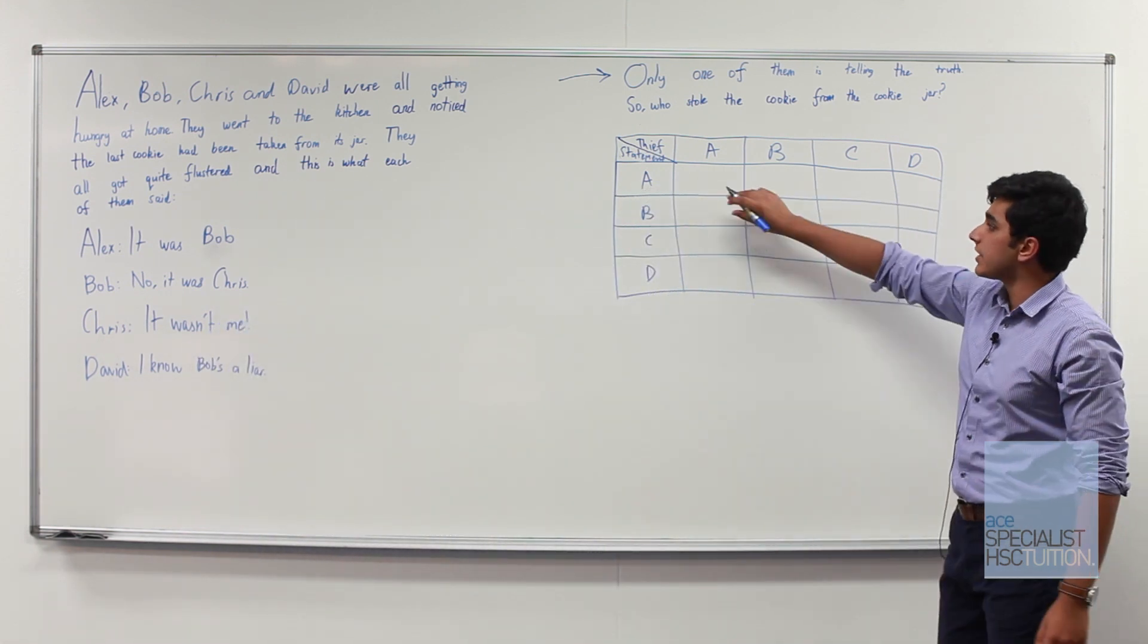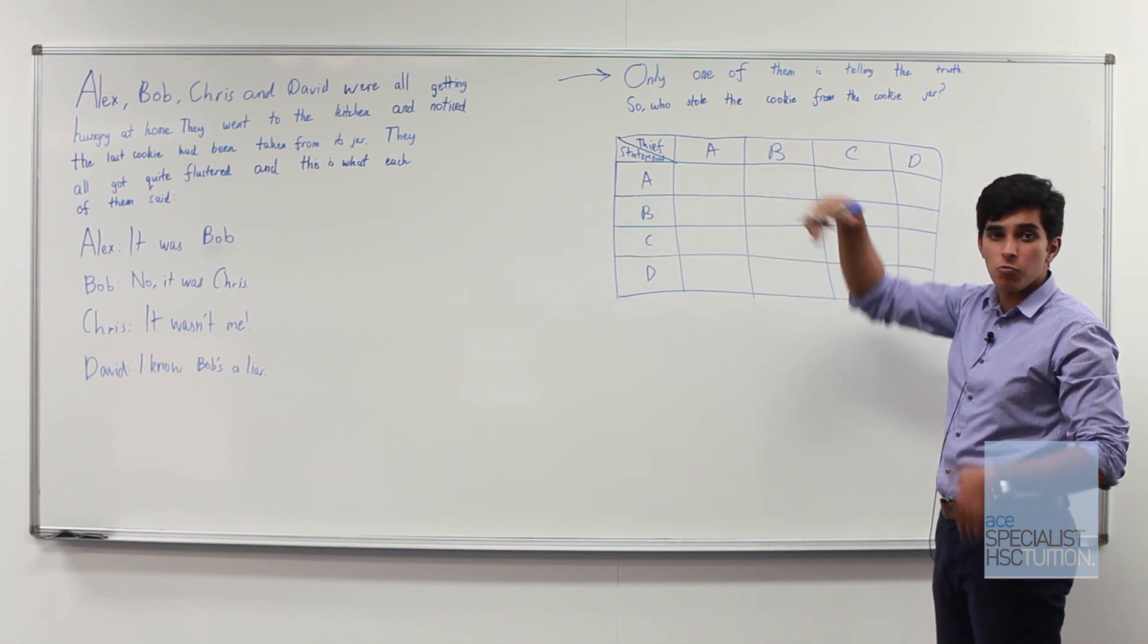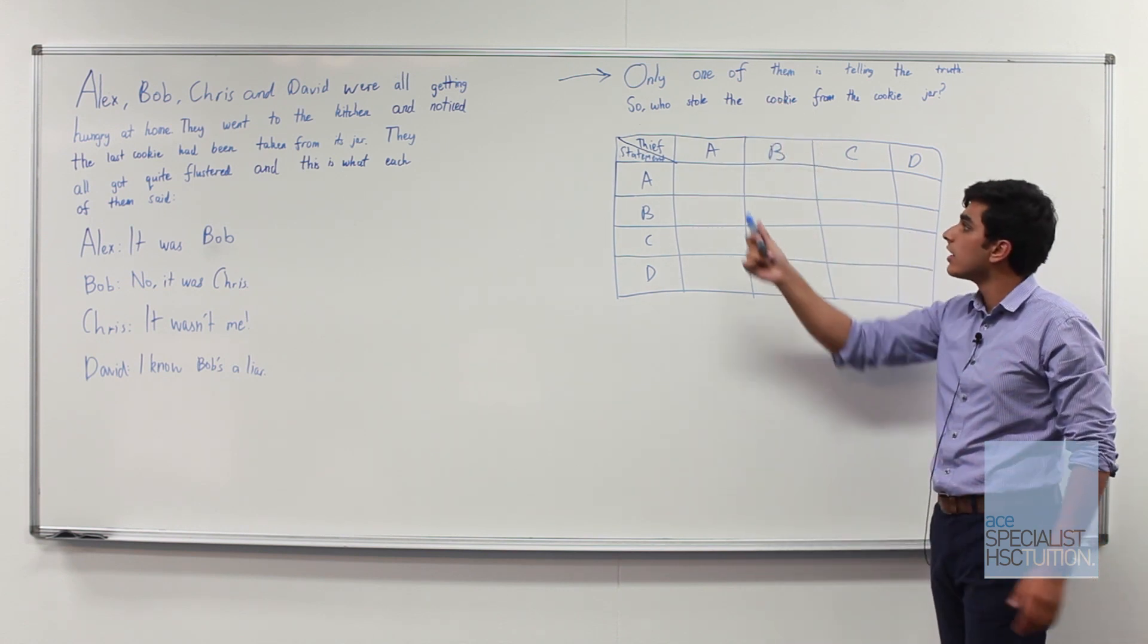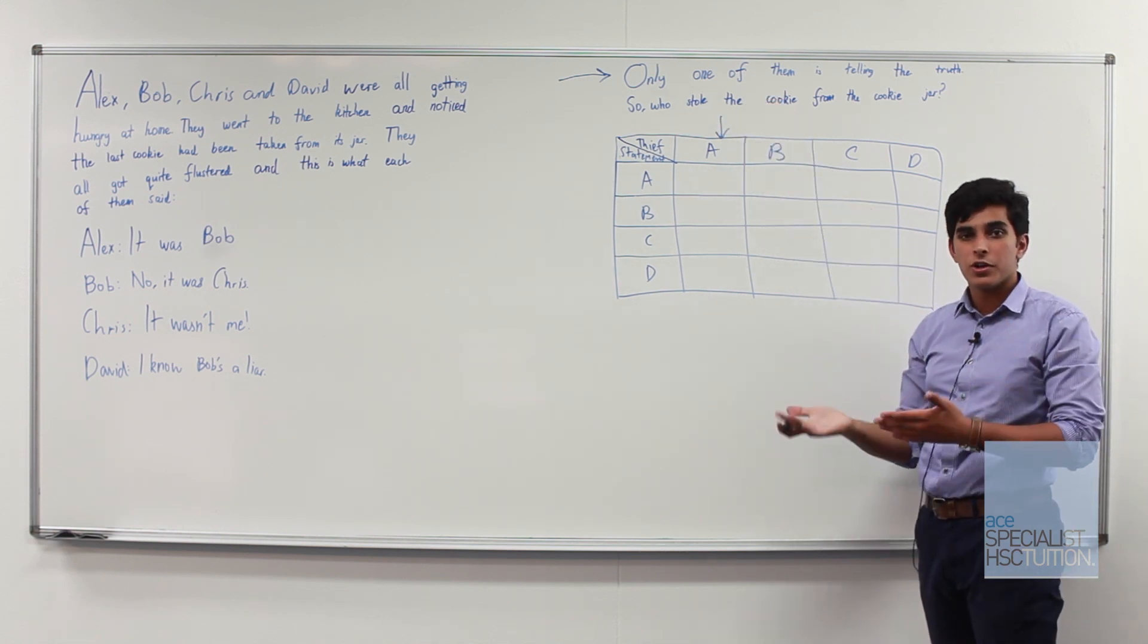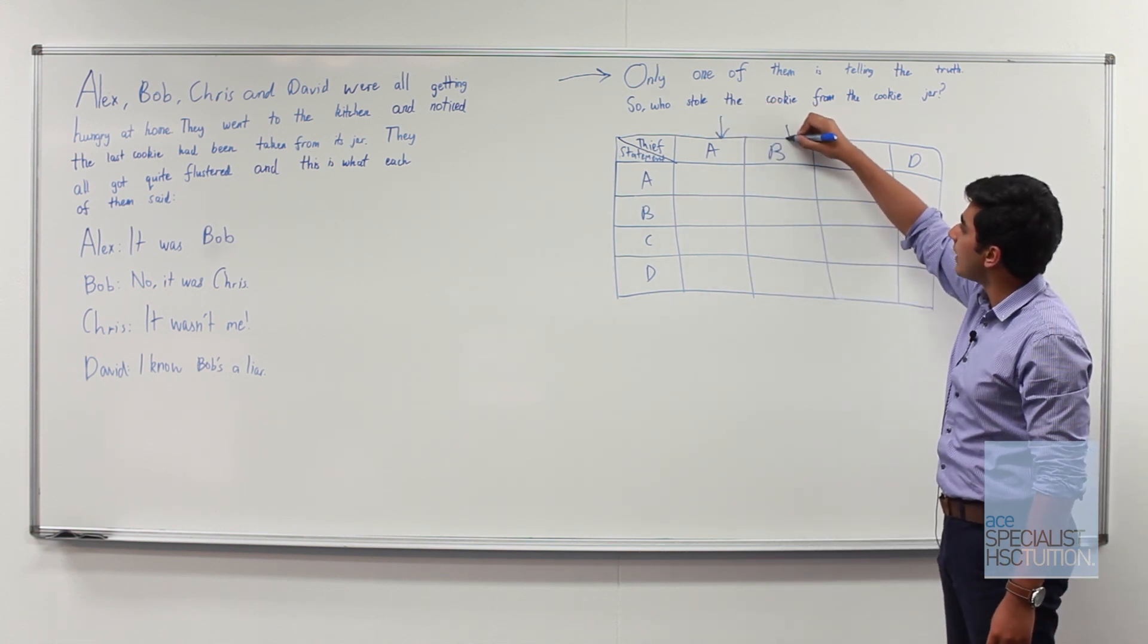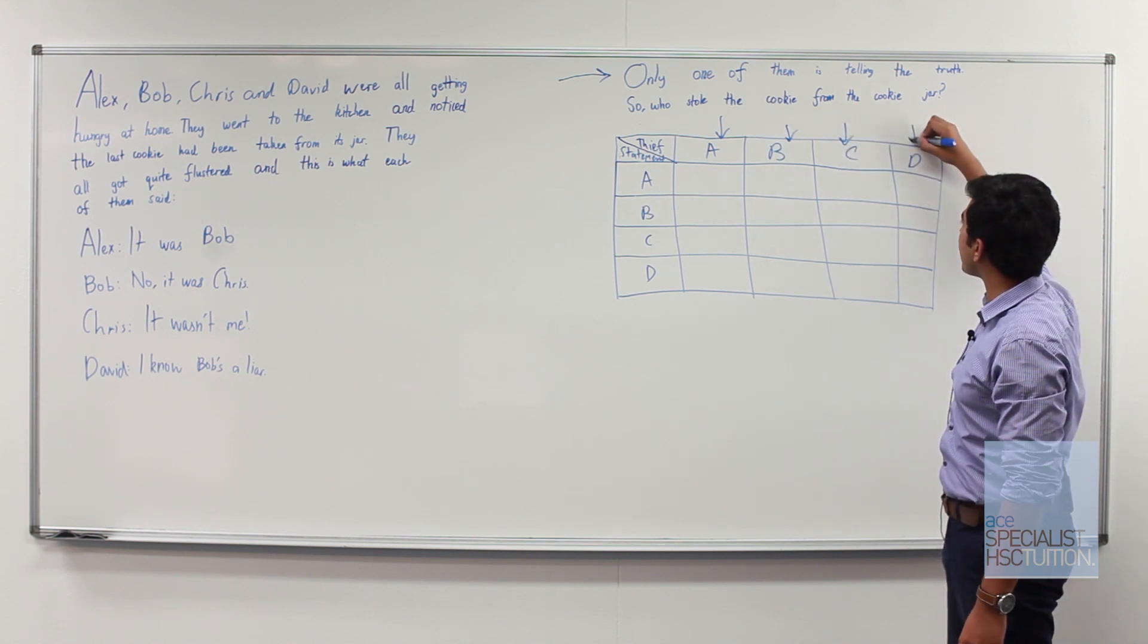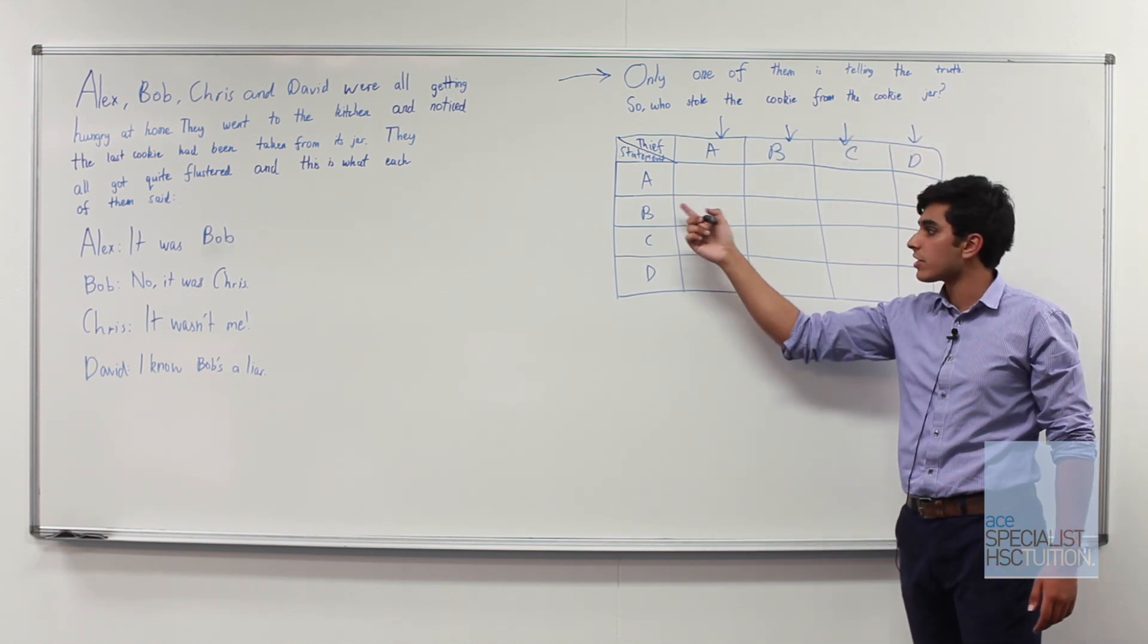So in this particular world when the worlds or universes are these columns where A for example has stolen the cookie in this particular place, B and then C and then D, we're going to work out whether statements are true or false.